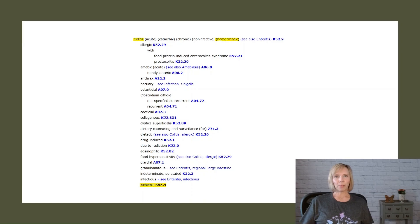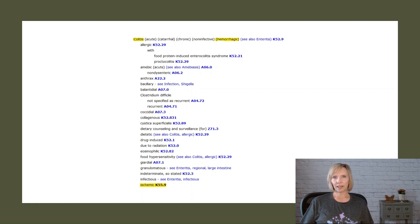When looking up a code in the alphabetic index, non-essential modifiers that are placed next to a main term apply to both the main term and all of its subterms. Let's take a look at the main term colitis as an example. We can see that hemorrhagic is a non-essential modifier, which means that if the patient experiences bleeding caused by colitis, the bleeding is included in the code assignment. This rule also applies to all the specific types of colitis listed as subterms under the main term.